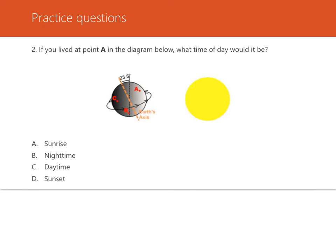Number two: if you lived at point A right here in the diagram, what time of day would it be? Here's the sun, here's the Earth, you live right here, here's the Earth's axis. Point A is located on the bright side of the Earth, right by the sun. This means if you lived there, it would be closest to the sun — it would be daytime. Look how the Earth is shaded: lighter over here and darker over there. The sun is hitting the side at A, so it's daytime; it would be nighttime over at C. Your answer is daytime.